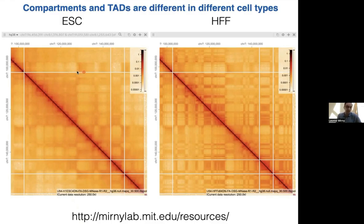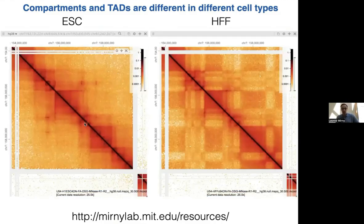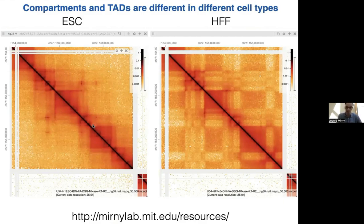For example, on the left you see a fragment of a Hi-C map from an embryonic stem cell; on the right from a human foreskin fibroblast. The checkerboard is stronger on the right—compartments are stronger in the fibroblast in this particular region. The near-diagonal patterns seem to be stronger in embryonic stem cells. You should realize that these patterns change as cells differentiate and progress through their lifetimes.